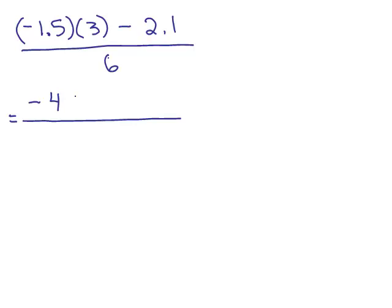And then you need to move the decimal in one place because there's only one digit after a decimal point. And then we just copy the rest minus 2.1 all over 6.